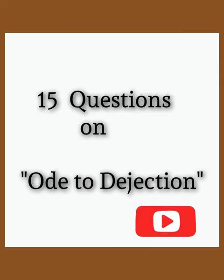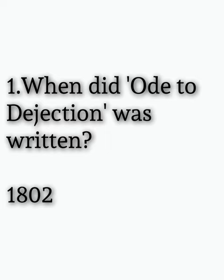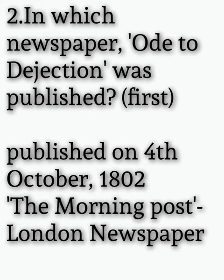Hi friends, it is 15 questions on Dejection: An Ode. 1st question: when was Dejection: An Ode written? 1802. 2nd question: in which newspaper was Dejection: An Ode published first? Published on 4th October 1802 in The Morning Post, a London newspaper.